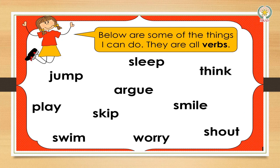Now in the next slide, I want you to tell me if you can do all the things shown, because this girl says: below are some things that I can do, and they are all verbs. The girl can jump, play, swim, skip, argue, sleep, think, and smile. Now you need to write down in your copy all the verbs that you can do — anything else aside from these.